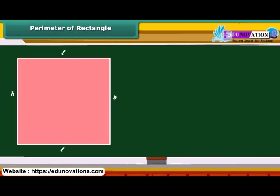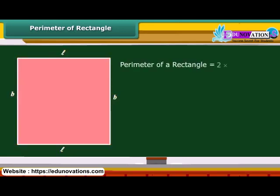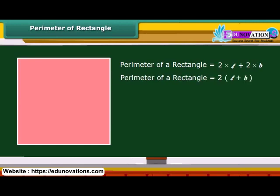Let us now calculate the perimeter of a rectangle. A rectangle is a four-sided geometric figure whose opposite sides are equal. Therefore, the perimeter of a rectangle is twice its length plus twice its breadth. We can rearrange this and say that the perimeter of a rectangle is twice the sum of its length and breadth.